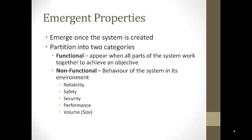An example of a functional emergent property is a bicycle or car becoming a transportation device when it's completely assembled — in other words, it moves. That's something that emerges functionally once it's all put together. Non-functional emergent properties are things that indicate the behavior of the system in its operational environment. For example, reliability, safety, security, performance, or its volume size.